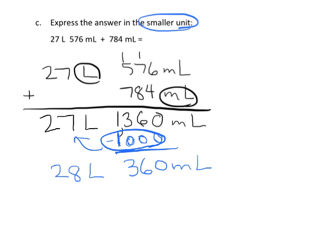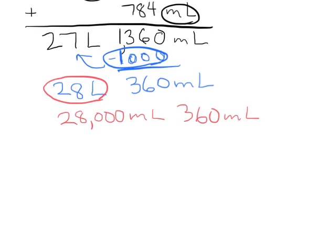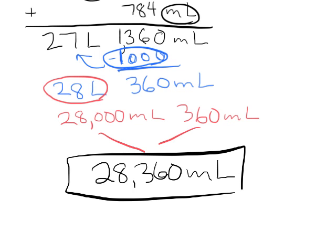But remember, they want us to express our answer in the smaller unit. So we're going to take those twenty-eight liters and turn that into twenty-eight thousand milliliters, plus the three hundred sixty milliliters we already had, and add those together — giving us twenty-eight thousand three hundred sixty milliliters, and that is our answer.